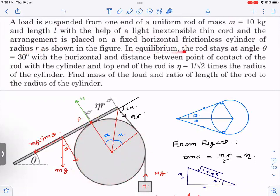In equilibrium, the rod stays at angle θ with the horizontal, and the distance between the point of contact of the rod and the cylinder and the top end is η times r, where η is 1 by root 2. Now we have to find the mass of the load and the ratio of length of the rod to the radius of the cylinder.